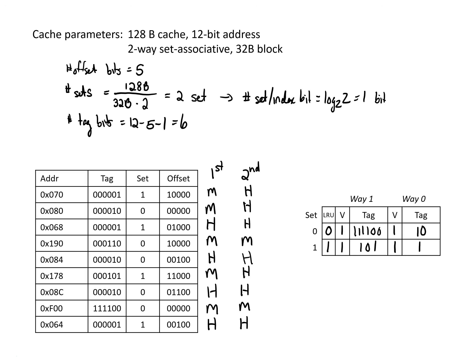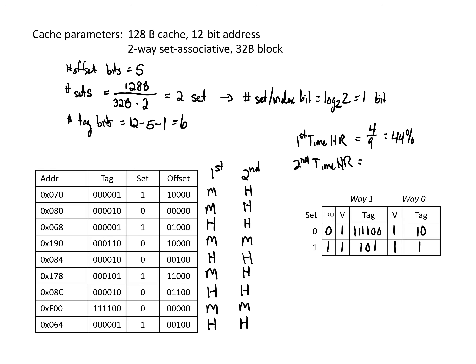Looking at the hit rate for these two iterations: the first time through, we hit 4 of the 9 times, giving a hit rate of 44%. The second time through, we hit 7 of the 9 times, giving a hit rate of 77%. We've improved our hit rate on the second pass, and comparing this to the direct-map cache, we've also improved the hit rate for both of these cases.